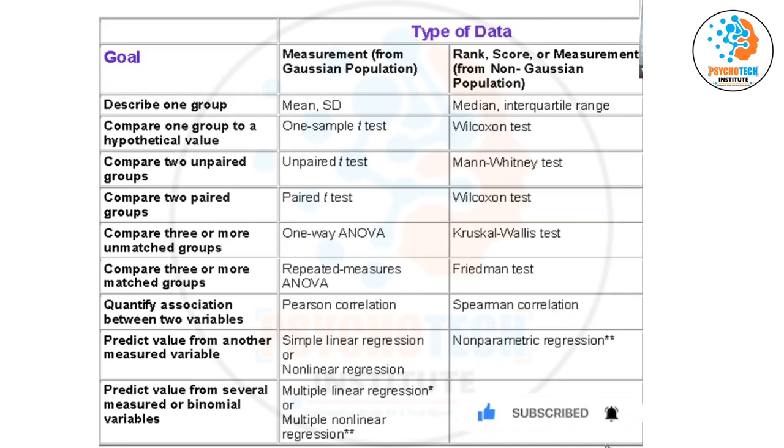In correlation also, if it is normally distributed then Pearson correlation. If it is normally distributed then it is Spearman correlation. But the other thing is same like it is plus 1 to minus 1. Okay?